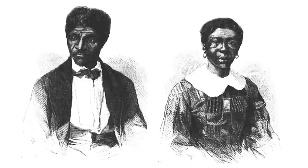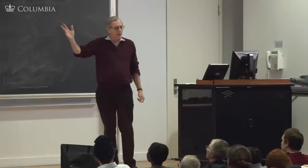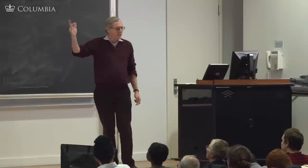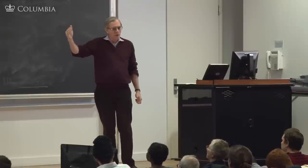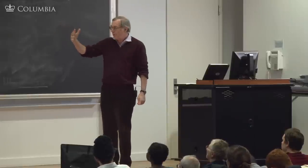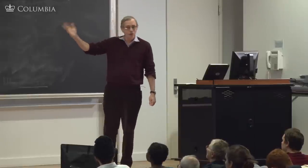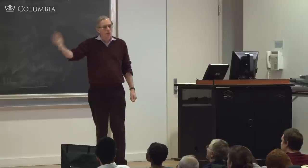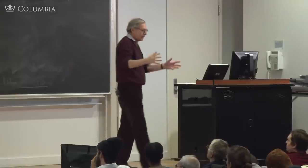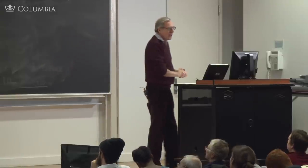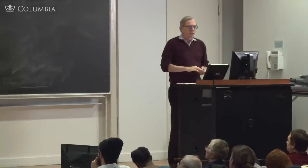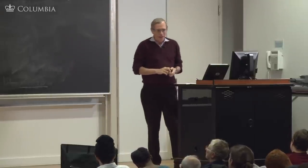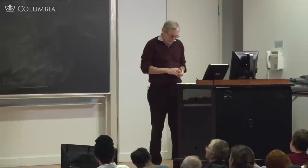We should not forget about Harriet Scott, because her fate was also decided by the Supreme Court, even though we call it the Dred Scott decision. They also had two daughters whose fate was also decided. So it was an entire family where the Supreme Court had to decide whether they were slave or free.